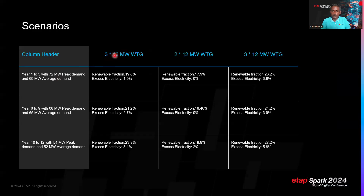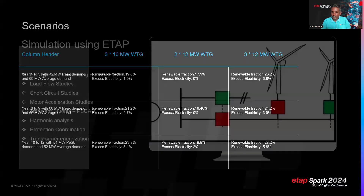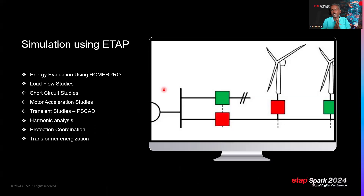Various scenarios have been evaluated: 3×10 MW wind turbine generators, 2×12 MW, and 3×12 MW configurations. The FPSO load varies over its life — years 1–5, years 6–9, and years 10–12 each have different demand profiles. For each scenario, renewable fraction, percentage of energy from renewables, and excess electricity are tabulated. This commercial and energy evaluation was performed using Homer Pro.